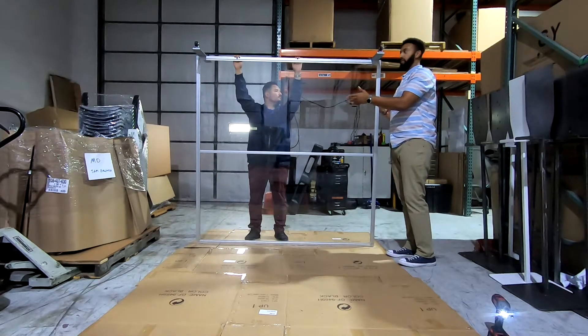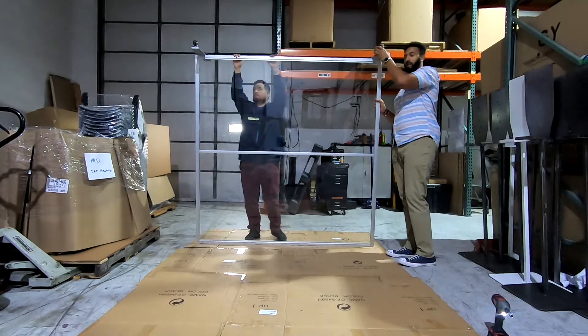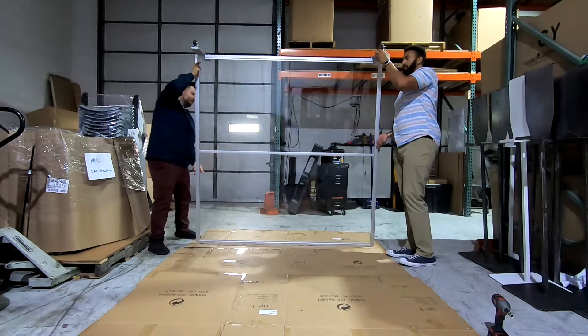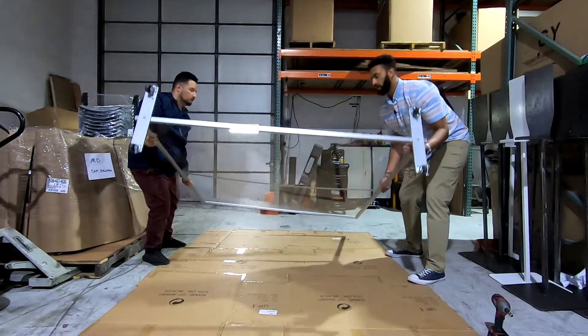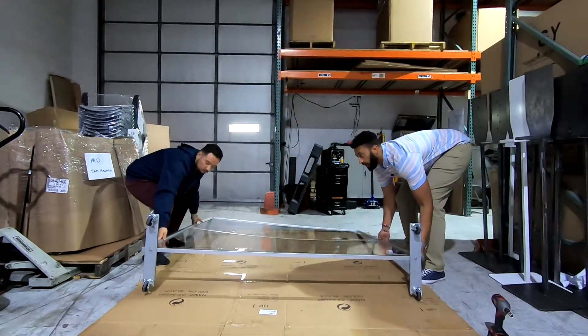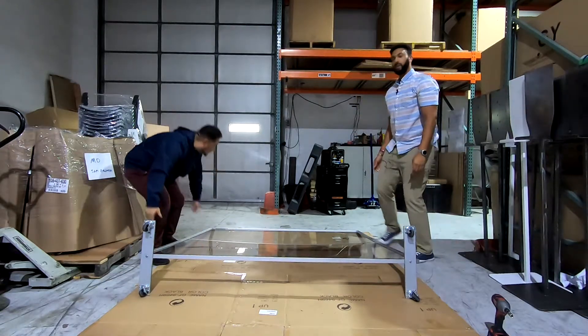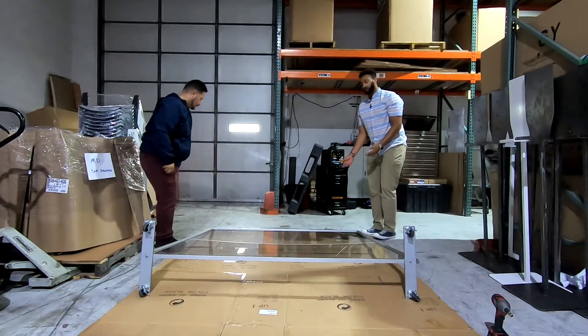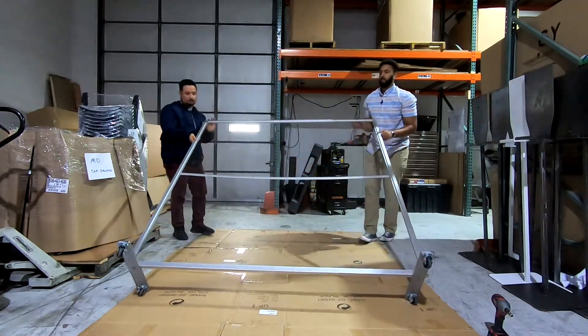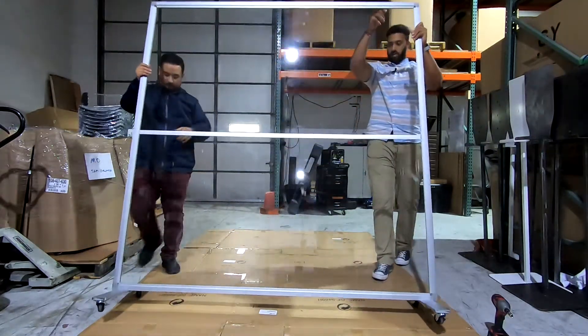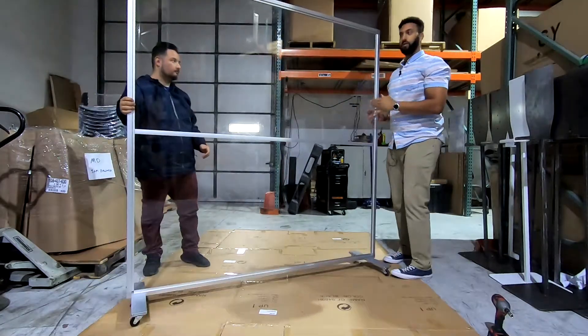After you have completed this part, you will lay it down slowly with your partner onto its side. Then from here, you would move back and move it upright. And there you go, you have your completed mobile sneeze guard partition.